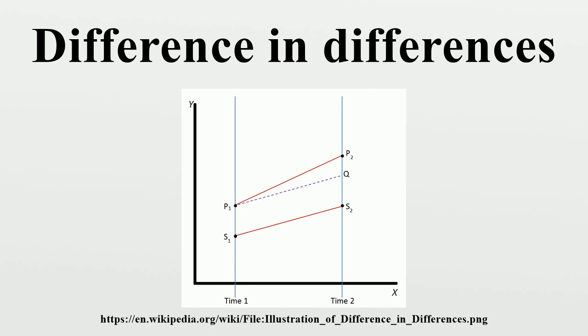When using a DiD model, various issues that may compromise the results, such as autocorrelation and Ashen-Felter dips, must be considered and dealt with.